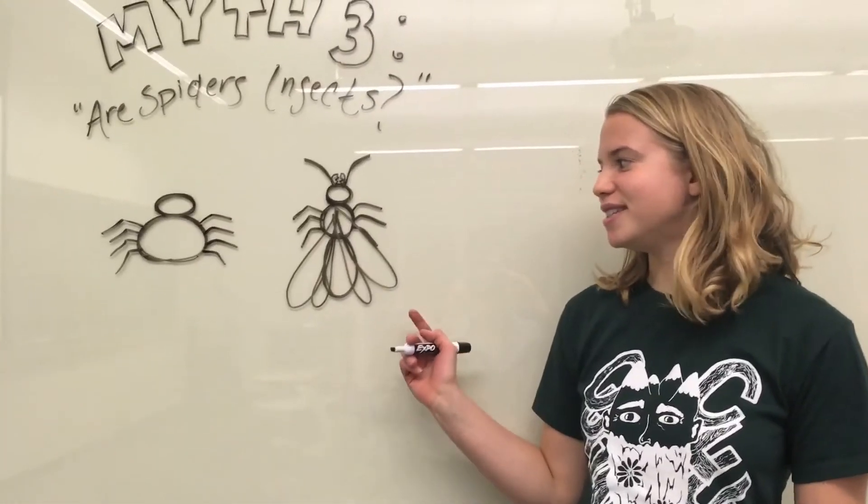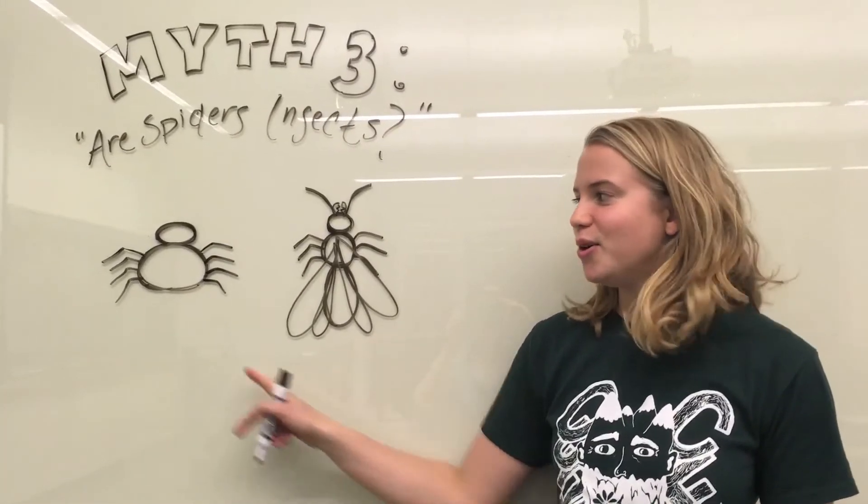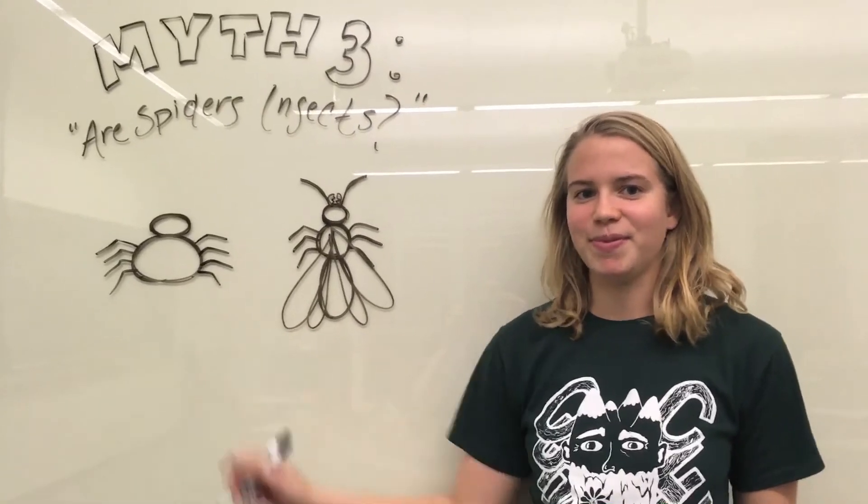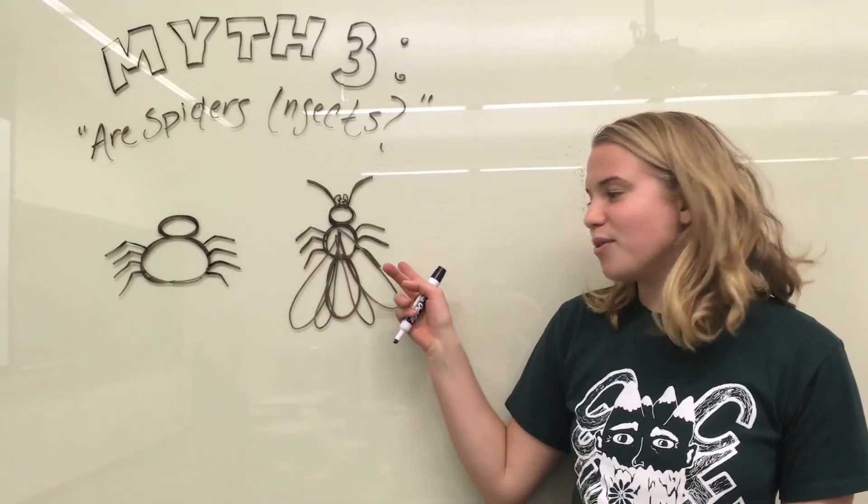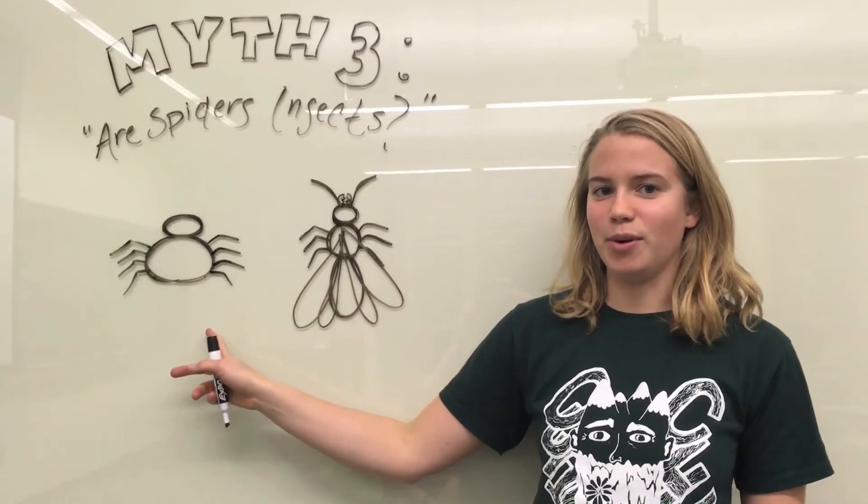So, I agree with Andrea. You can see that insects have wings, whereas spiders do not have wings. Also, just as she said, insects only have three pairs of legs, whereas spiders have four pairs of legs.